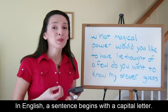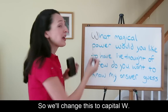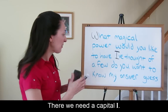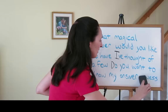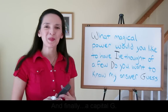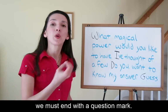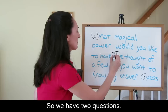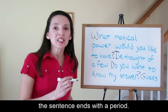In English, a sentence begins with a capital letter — that's an uppercase letter. So we'll change this to capital W. There we need a capital I. Here we need capital D. And finally, a capital G. Now, as we write sentences, we're either making a statement or asking a question. If we're asking a question, we must end with a question mark — that's called an interrogative sentence. Here and here. If you're simply making a statement, the sentence ends with a period.